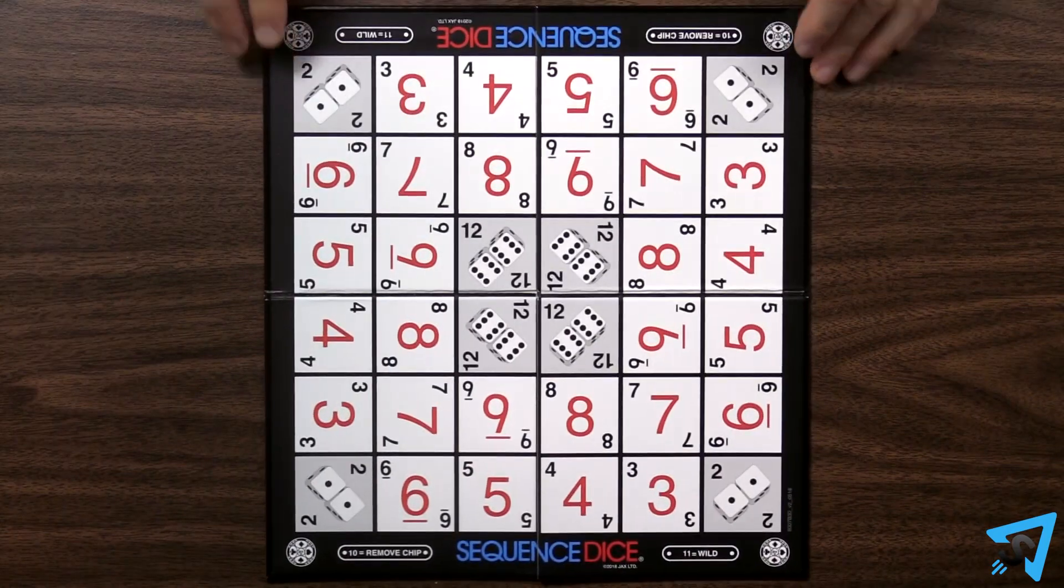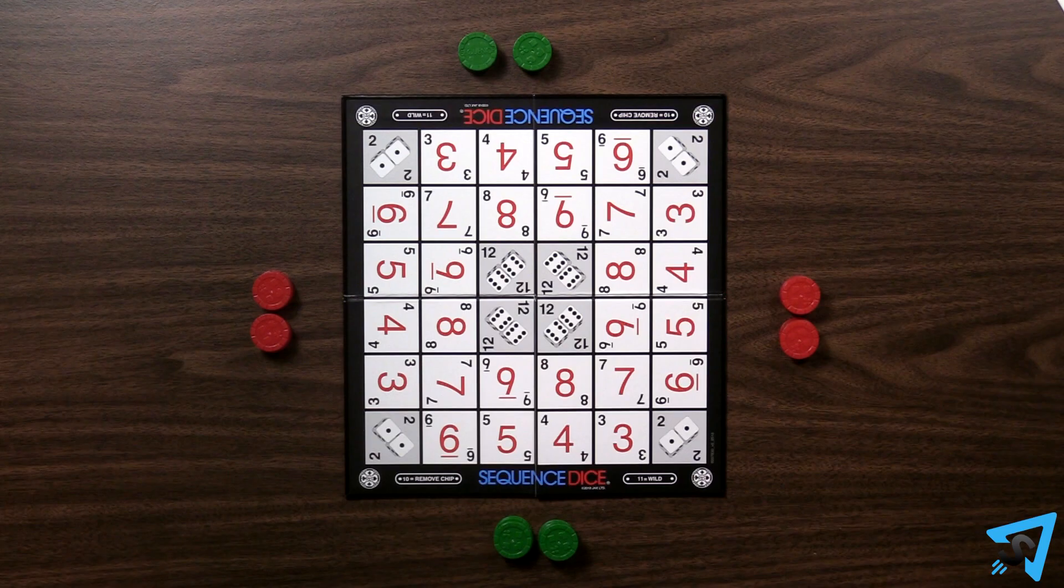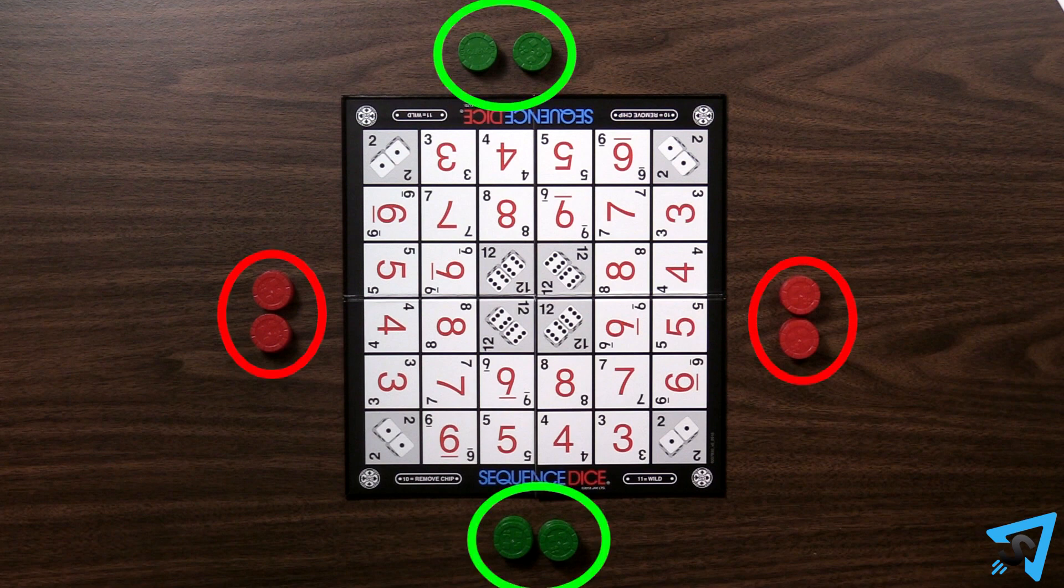Lay out the board and each player picks a color. When playing with four people, players will be on two teams sitting in an alternating turn order, and teammates may not help or coach their partners.